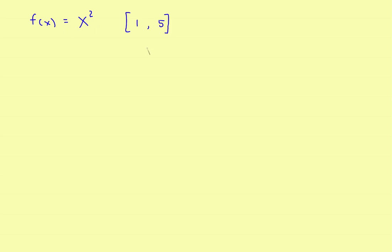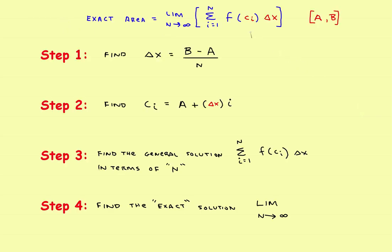If you have not done it yet, I'd suggest that you watch part one of the Riemann sum series because it will explain the process. Let's start by looking at the formulas we're going to use. We'll do the four steps: first, finding delta x — the width of each rectangle; then c sub i — the right edge of each rectangle; then we'll find the general solution; and finally find the exact solution by finding the limit as n goes to infinity.